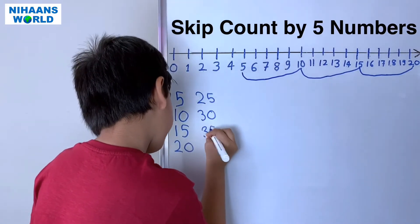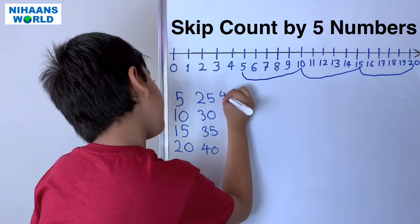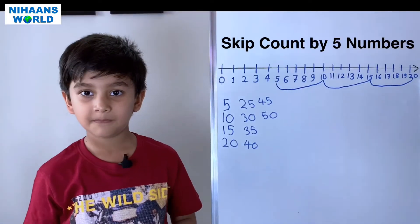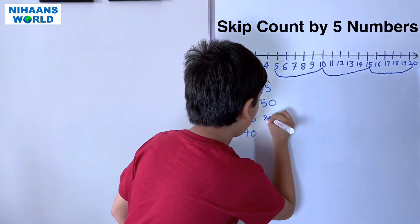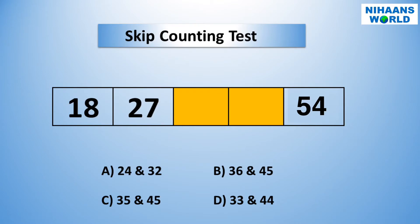Let's solve this problem of skip counting. Twenty-seven minus eighteen equals nine, so we have to add nine to twenty-seven. The answer is B: thirty-six and forty-five.